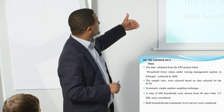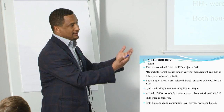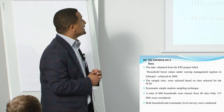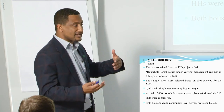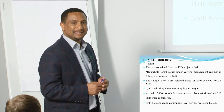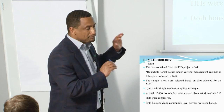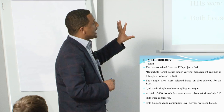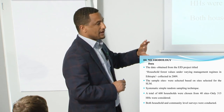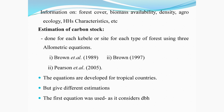Regarding methodology: we have data collected for the project entitled 'Household Forest Values Under Varying Management Regimes in Ethiopia.' The purpose was to examine forest values under different types of property-like regimes. The sample sites were selected based on sites chosen for the Sustainable Land Management Program, run by the World Bank and GIZ. After purposely selecting the sites, we used a simple random sampling technique to select households. Originally 600 households, but for our purpose we selected 315 households where ownership data were collected, both at household and community level.